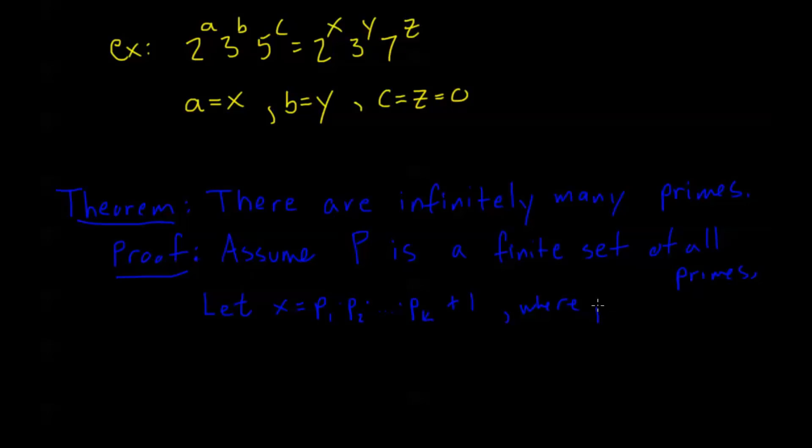And this is where my big set P is all of these primes that I've listed here. So in other words, what I'm saying is I'm going to multiply all of my primes together. I know there's only a finite number of them. So I multiply them all together and then I add 1 to that.